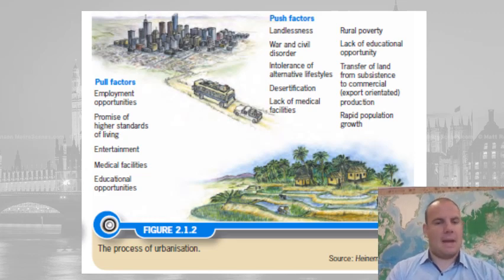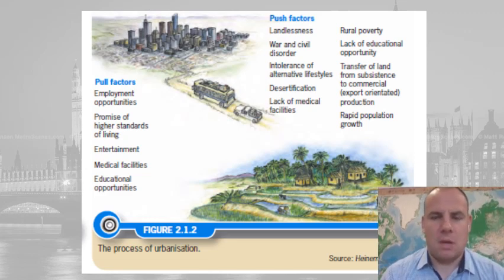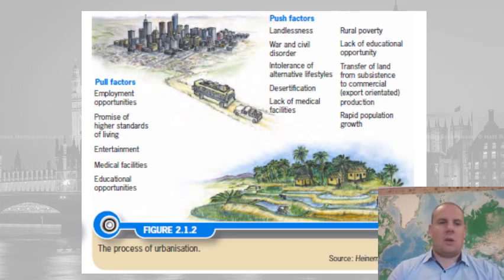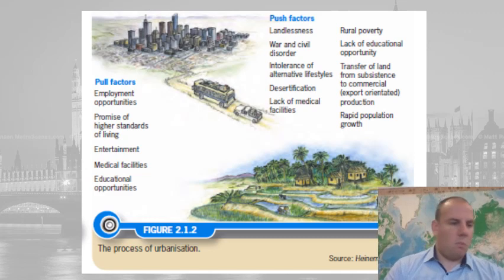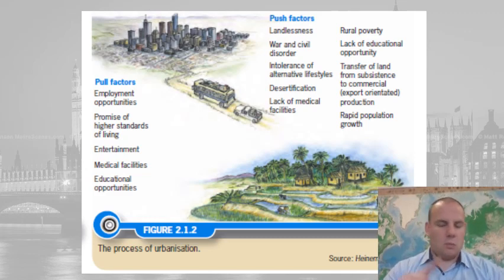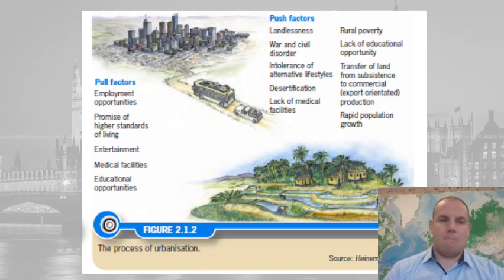A pull factor is something that attracts you to live in the city: employment opportunities, the promise of high living standards, entertainment, medical facilities, and educational opportunities. So going back to the lesson goal, we've looked at urbanization — what it is and why people move to cities.